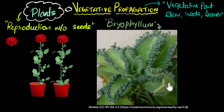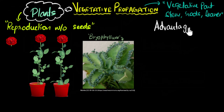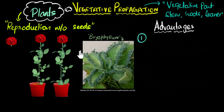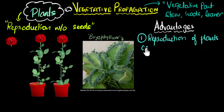Before we wind up this video, let's put it all together and look at the advantages of vegetative propagation. The first advantage is something we already spoke about: it helps in the reproduction of plants which cannot make viable seeds — like roses and bananas.